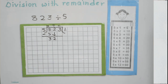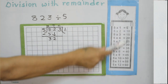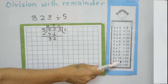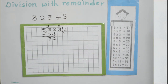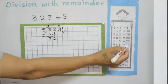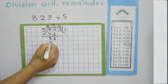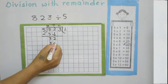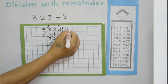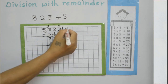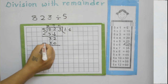Again, let's check the 5 times table: do we have 32 as a multiple of 5? No. So what is the nearest number? 30. So 5 times what gives 30? 5 times 6 is 30. Write 6 in the quotient.